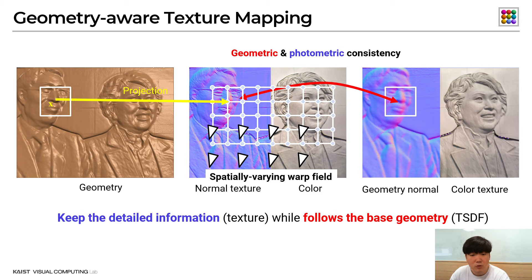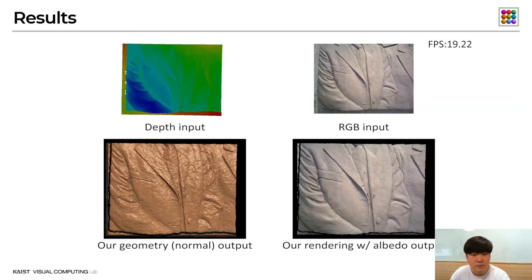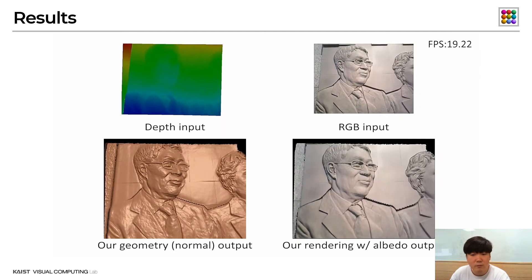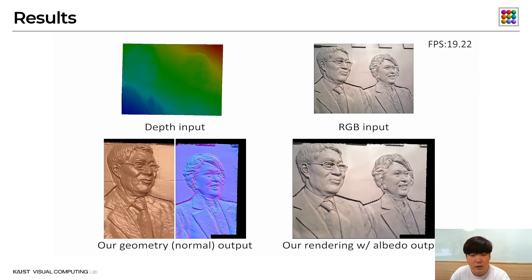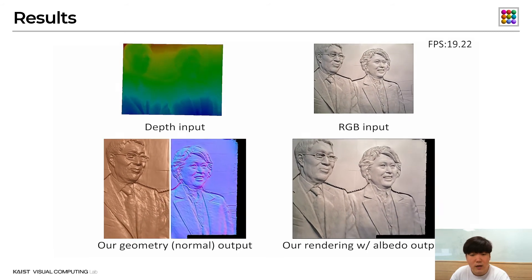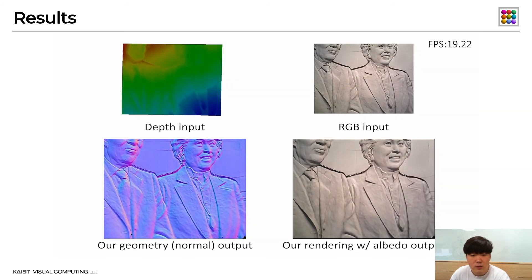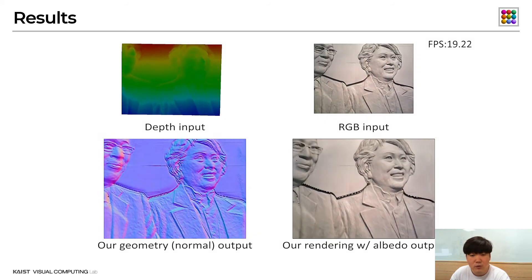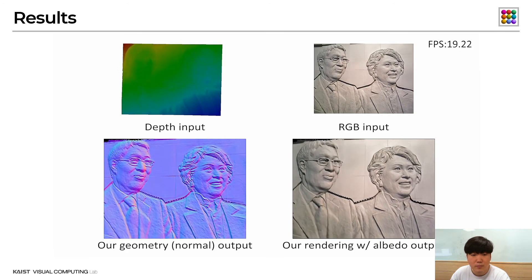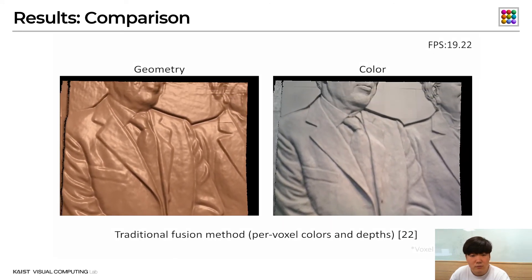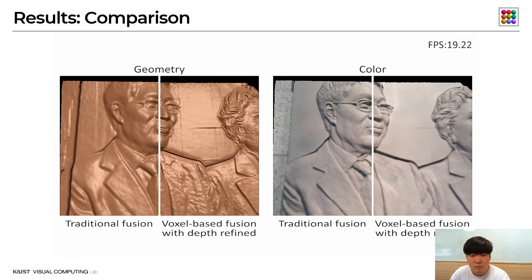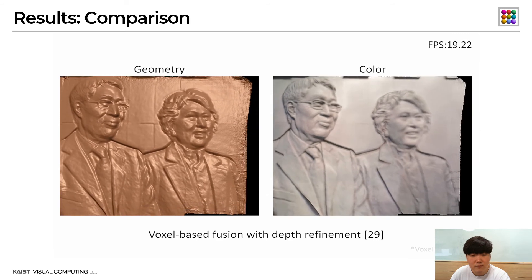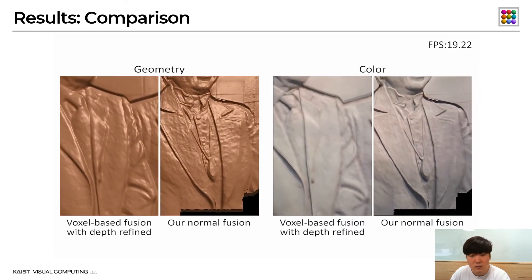Finally, we blend the normals and color textures using this warp field. We use two input images — a depth map and color map obtained from a single RGB-D camera — to reconstruct high-resolution geometry and texture simultaneously. Our method runs at 19 frames per second on a conventional desktop computer. We compare our method with two different fusion methods. The traditional fusion-based method by Nisno et al. has blurry results in both geometry and color. The existing real-time SFS-based method by Uero improves the quality but is still blurred.